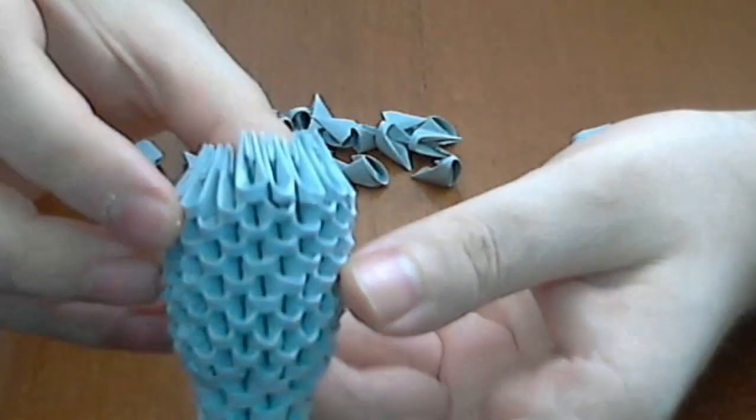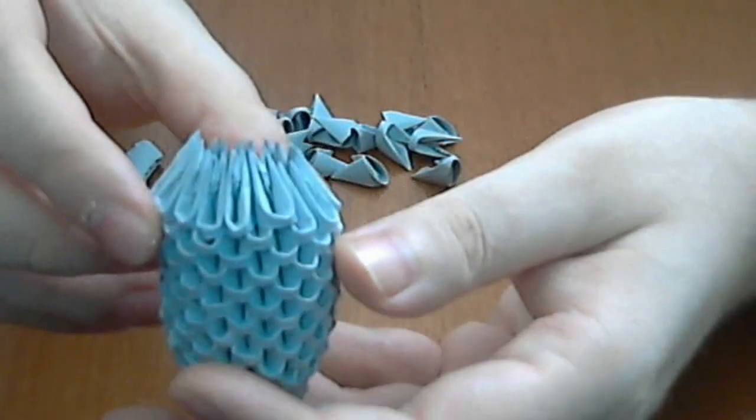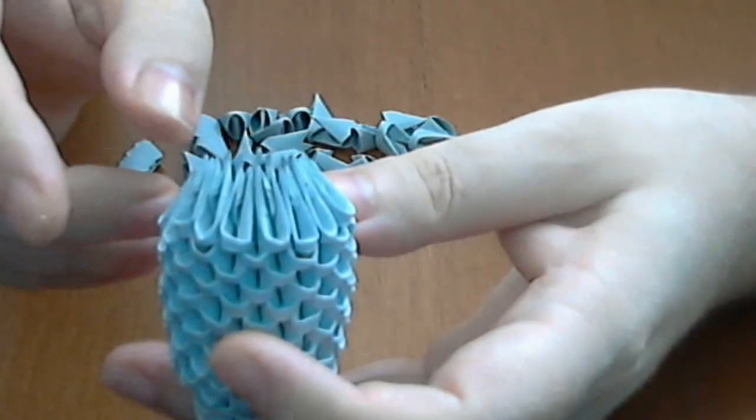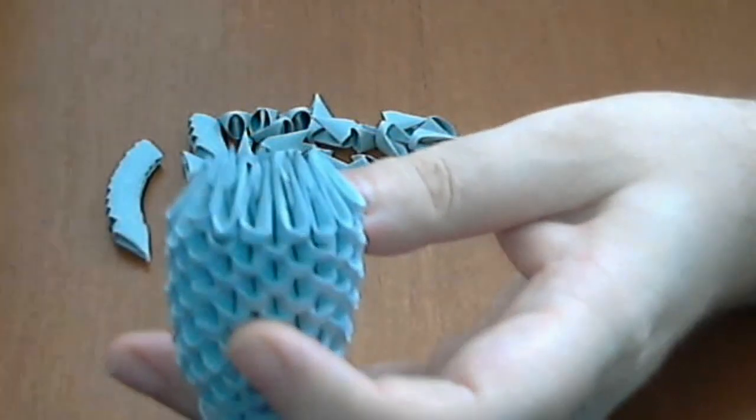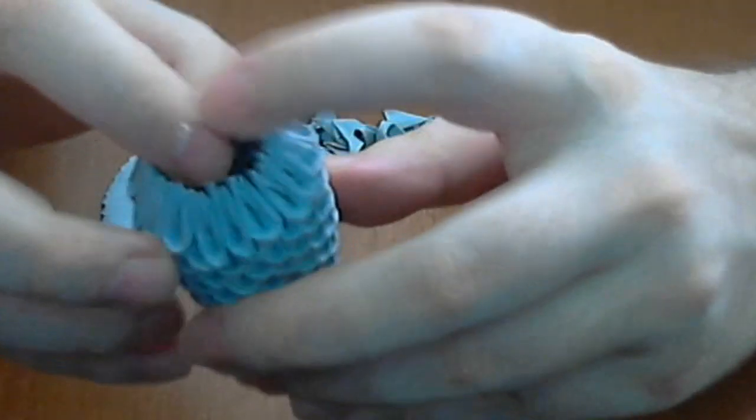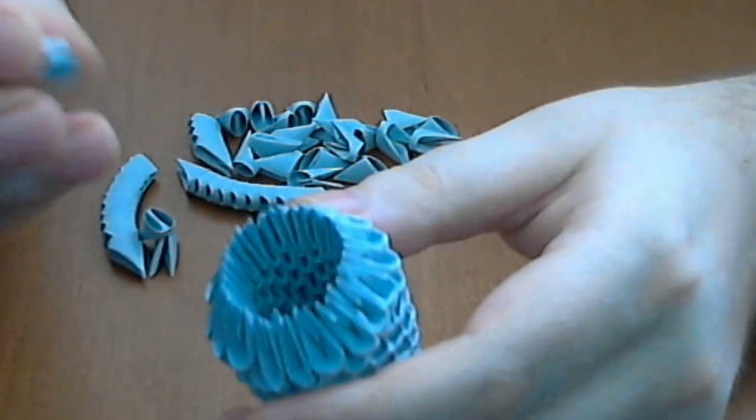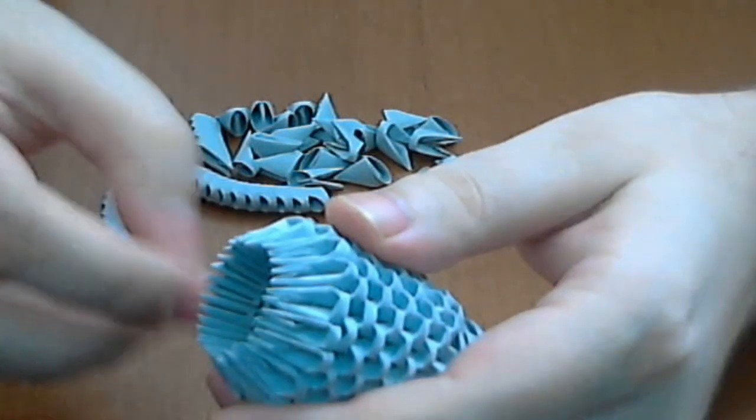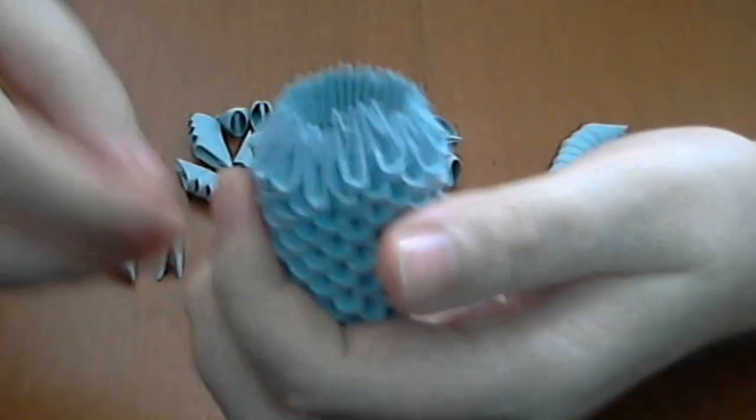And continue like this until you finish the row. You alternate one normal piece with two pieces in two edges. Now we have 18 pieces in this row. And now we will put 26 normal rows. Like this.